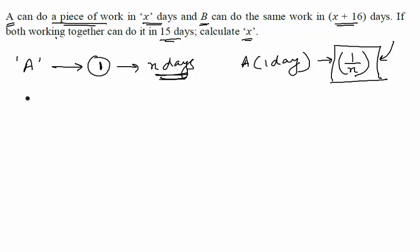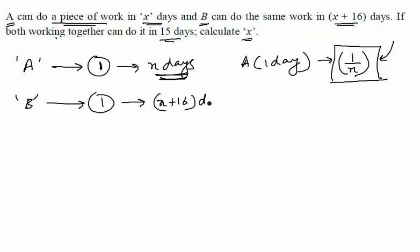Now B can complete the same work — one work — in x plus 16 days. So basically this means that B is slower at doing that particular task as compared to A, that's why B is taking more number of days.